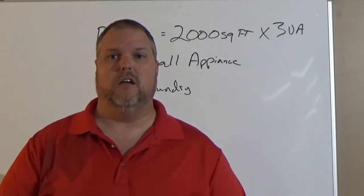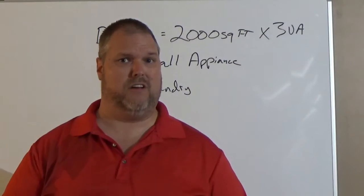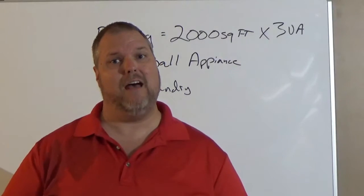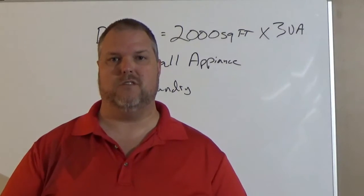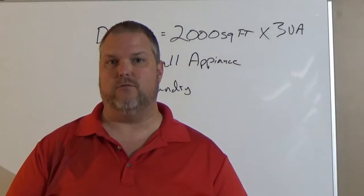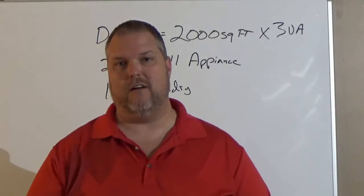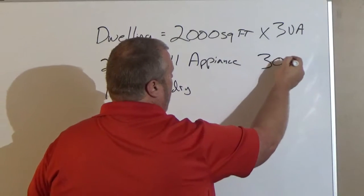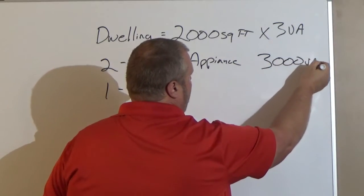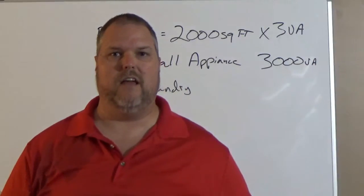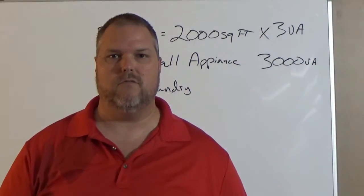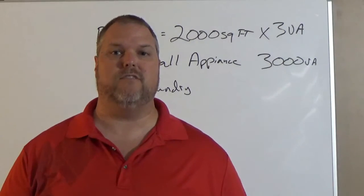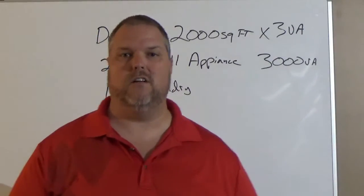If you have a minimum of 2, which you have to have 2, you can have 3, you can have 4, you can have 5, you can have as many as you want. Just remember that every 1 after that, you've got to add 1,500 VA. So our small appliance circuit, if we're only doing 2 small appliance circuits, we have to multiply it by 2, which gives us 3,000 VA. Same thing with our laundry circuit. Our laundry circuit is 1,500 VA. So we're going to add 1,500 in.